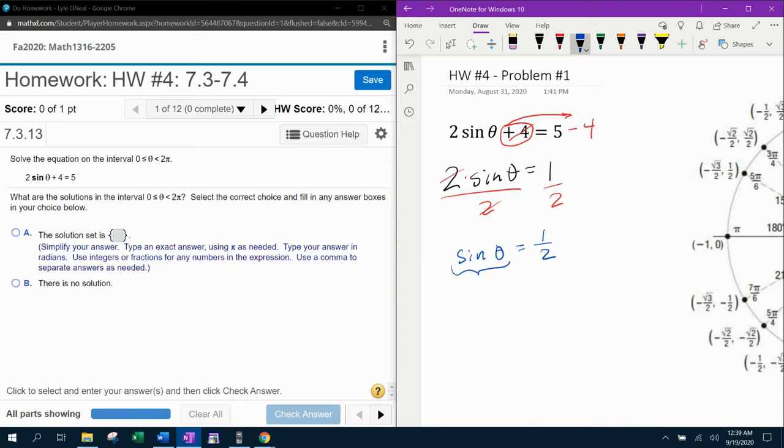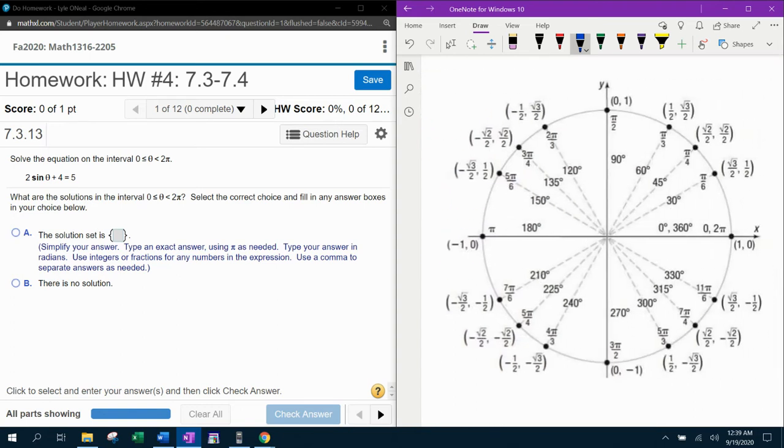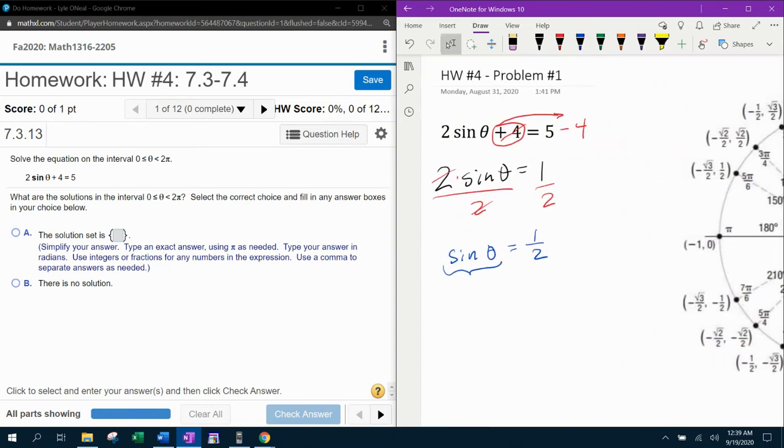Now, at this point, I want you to notice that we do have the trig function isolated. And we're solving this equation on the interval from zero to two pi. So that means within one revolution of the unit circle, we are looking for all of the angles theta that have a y-coordinate of a half.